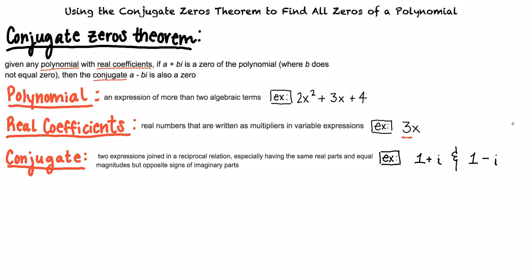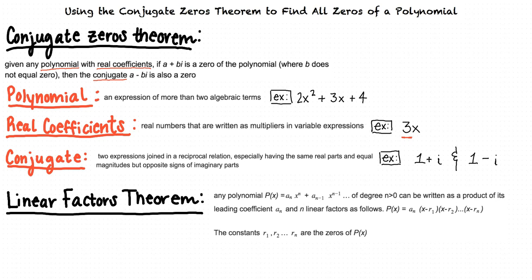Last, let's define one more theorem that will come in handy in just a minute: the linear factors theorem. Any polynomial p of x equals a sub n times x to the power of n plus a sub n minus 1 times x to the power of n minus 1, and so on, all the way through factors of the form x minus r sub 1 through x minus r sub n. The constants r sub 1, r sub 2, all the way through r sub n are the zeros of p of x.